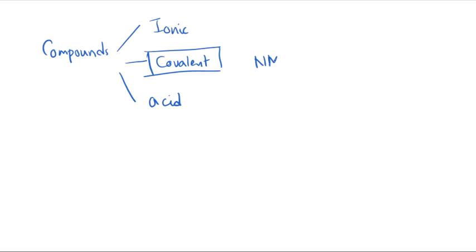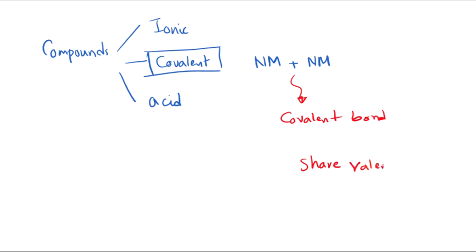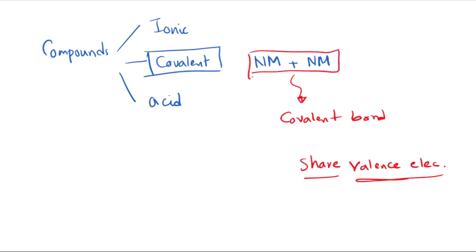Covalent compounds are composed of only non-metals, and the attraction between these two non-metals we call a covalent bond. A covalent bond is the attraction between two non-metals, where each non-metal shares valence electrons. We don't need to fully understand valence electron sharing today — in the next chapters we will cover the identity and nature of bonds. For now, we just need to know that each non-metal shares electrons to make a covalent bond.